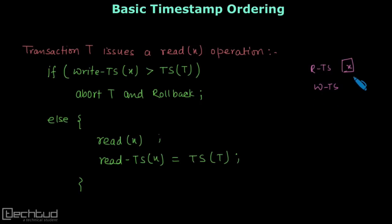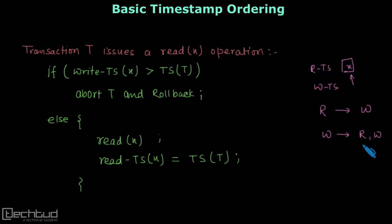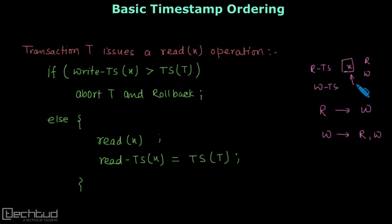For a database item x, if we are performing a read operation it will have conflict with only write, and if we are performing a write operation it can have conflict with read as well as write. When some transaction wants to access this database item, there may be two reasons: the transaction wants to perform a read, or the transaction wants to perform a write. In each case we will have a specific rule.